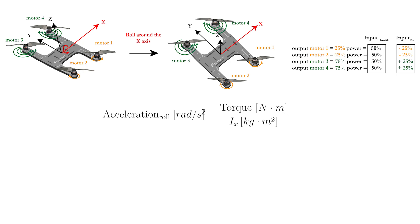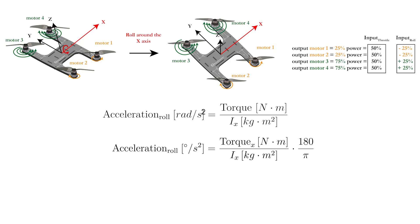The resulting angular acceleration in the roll direction depends on this applied torque but also on the distribution of the mass of the object that you roll around. This mass distribution is described by the moment of inertia, called Ix. To get the angular acceleration in degrees per square second, just multiply the equation in radians per square second with 180 degrees divided by pi. Let's start by developing the equation to express the torque around the x-axis.